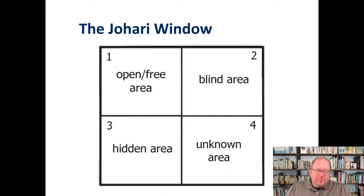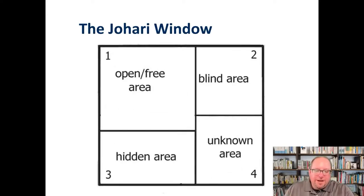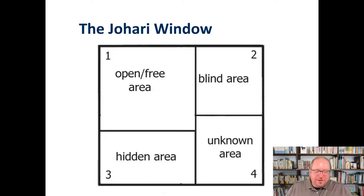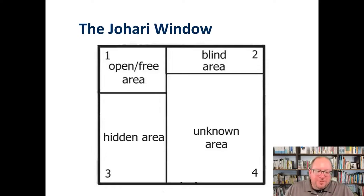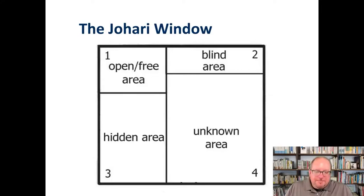Each of these areas is going to be different for every relationship you have, because some people know you better. With my wife, good friends, and family, my open and free area is bigger — they know a lot about me. The hidden area is smaller; I don't keep as much from them. But in relationships with people we're just getting to know, that open and free area is much smaller and the hidden area is larger, because we haven't told them much yet and we're still figuring out if we can trust them with that information.